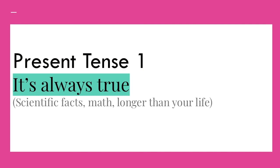Here are the four special uses. The first one is: it's always true. For example, scientific facts — a circle has no corners, but a triangle has three corners. Math: two plus two is four; four plus four equals eight. Anything that's longer than your life — for example, the dinosaurs are extinct, the earth goes around the sun, the month has 30 or 31 days. All of those are simple present because they're always true. They're also called timeless truths.